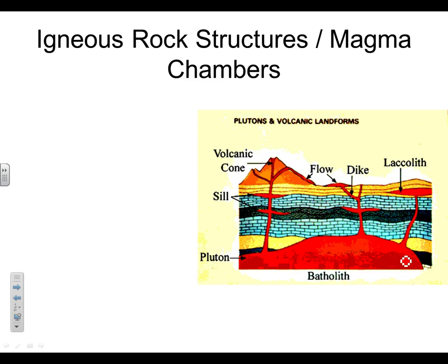We're going to start with a picture drawing the different magma chambers. If one of the magma chambers is full of magma, it's called a magma chamber. If the magma cools and turns to rock, then it's called an igneous rock structure. So they're pretty much the same thing — an igneous rock structure and a magma chamber.